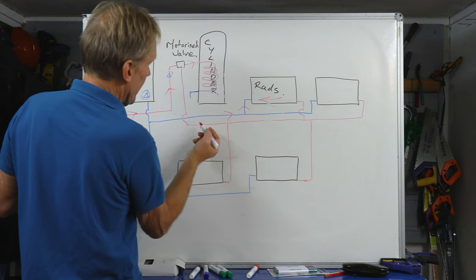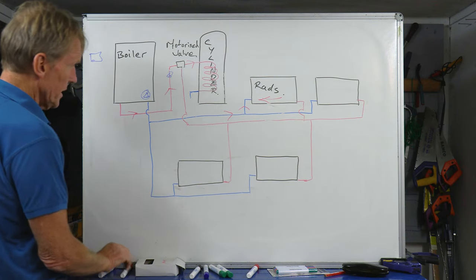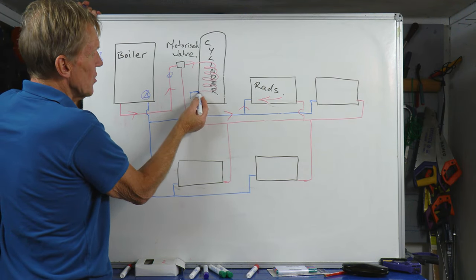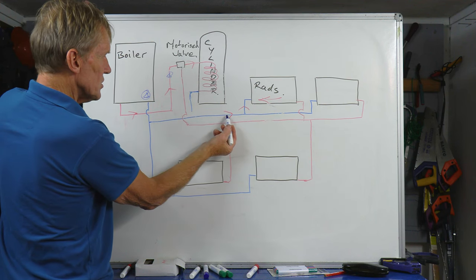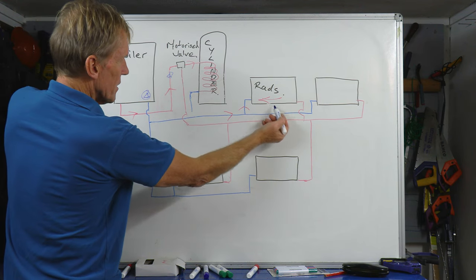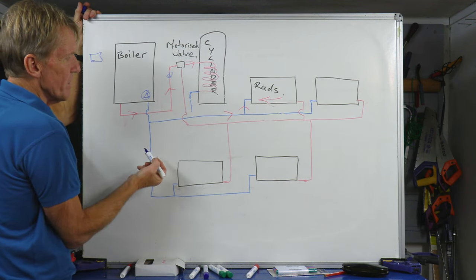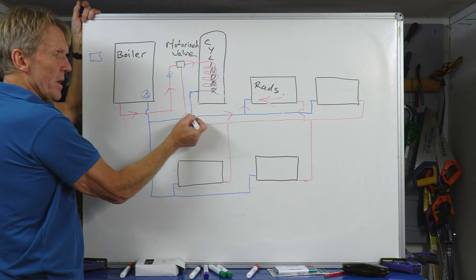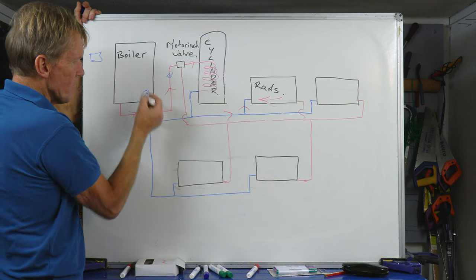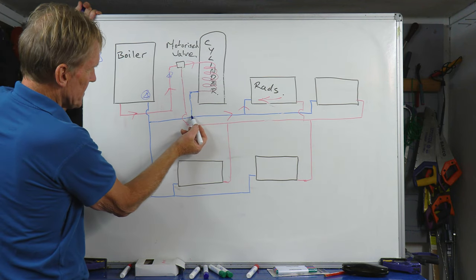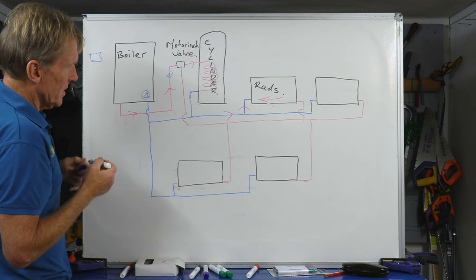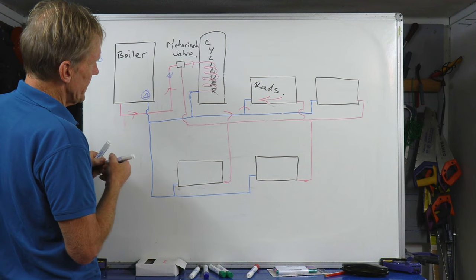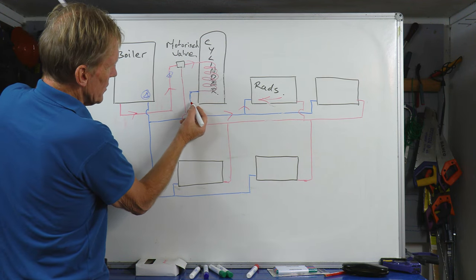Now the reason that's happening is because a lazy plumber or an ignorant plumber or whatever, or a DIYer, has taken that return from the cylinder and they thought, oh look, this is the return from the radiators, it's going back to the boiler anyway, I might as well hitch a ride on it. So they do their tee in that piece of pipe work there rather than in what we call the primary flow and return. So if they do that, what then happens is that that water can now circulate through the radiators the wrong way.